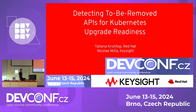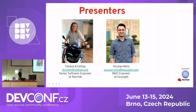The topic of the talk is something that everyone could relate to. It's how you detect deprecated APIs while preparing for Kubernetes upgrade readiness. It's a joint research project done by Red Hat and K-Site — a non-remunerated partnership that's been going on for about two years. We've done several projects so far, and this is just one of them I'm presenting today.